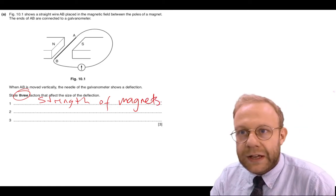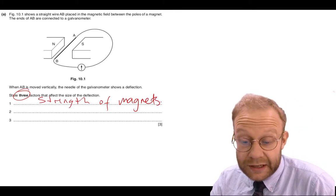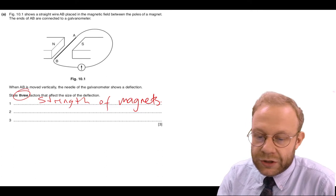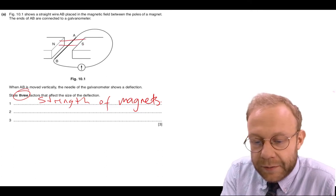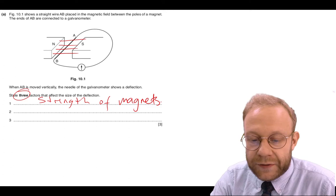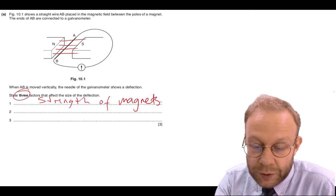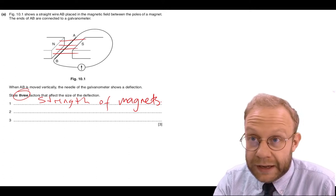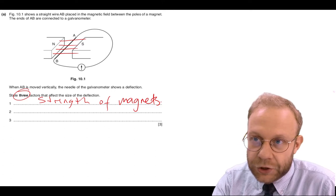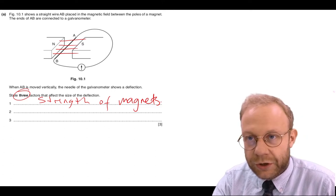Why does that affect the size of the deflection? The deflection measures the current. If we think between these two magnets, we've got some magnetic field lines. As the wire is moved through that gap, the wire is cutting the field lines, which induces the current.